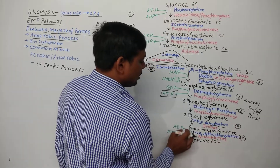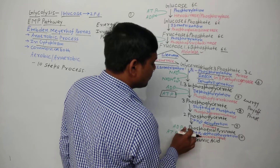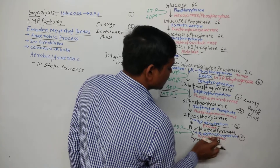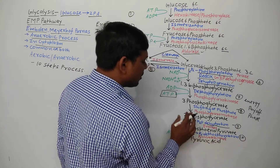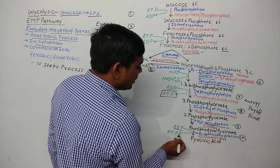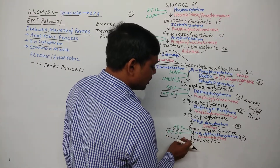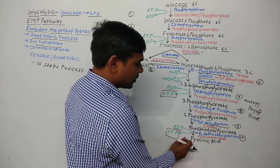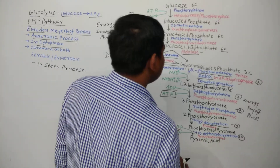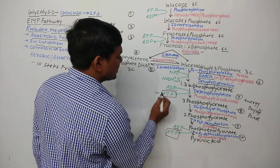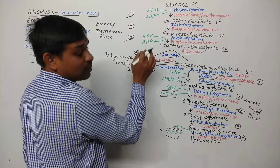In step 10, the final step, phosphoenol pyruvate has one phosphate. Dephosphorylation occurs — that phosphate is removed and transferred to ADP, converting ADP to ATP. Phosphoenol pyruvate is thus converted into pyruvic acid or pyruvate. In the last 5 steps, ATP is being generated, while in steps 1 and 3, ATP was being consumed.